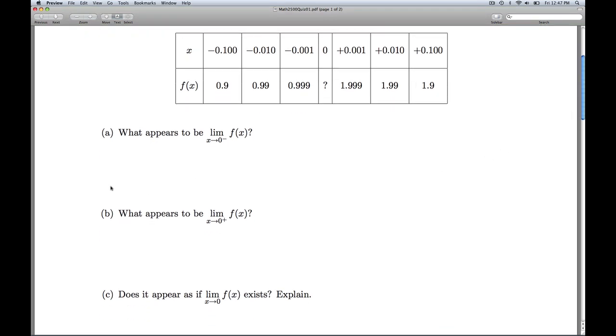Does it appear as if the limit as x approaches 0 of f(x) exists? So we don't have a plus or minus down here. That means that we need to look at what's happening from both directions. Well, from the left, it's getting closer to 1, and from the right, it's getting closer to 2. In order for the limit to exist, it has to approach the same number from both sides.